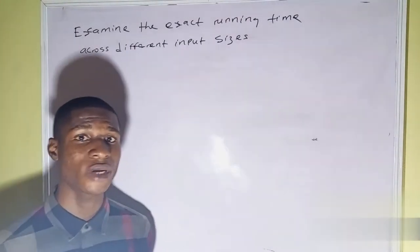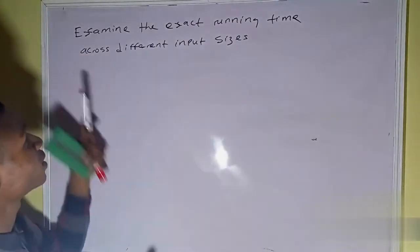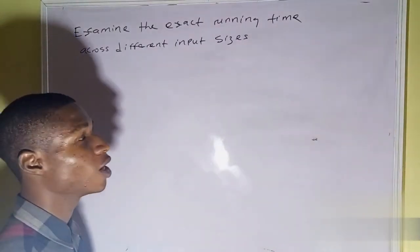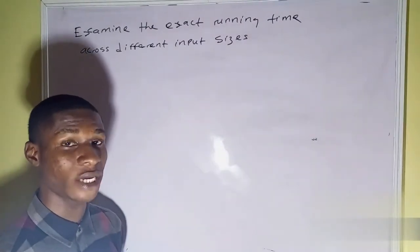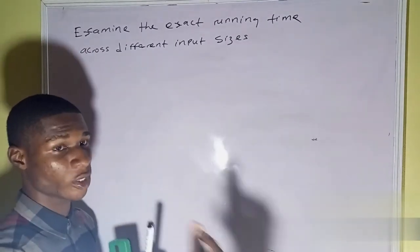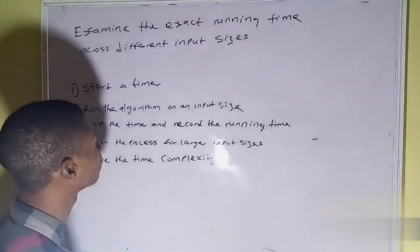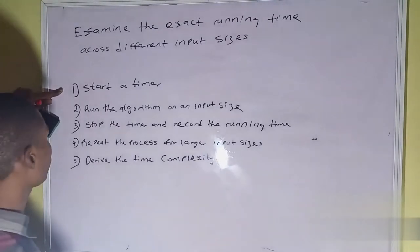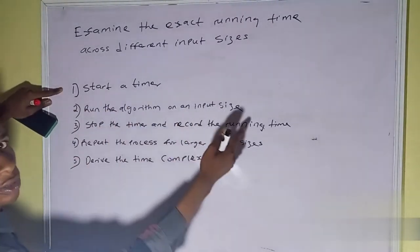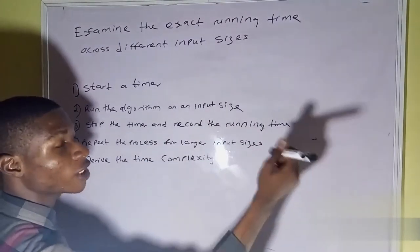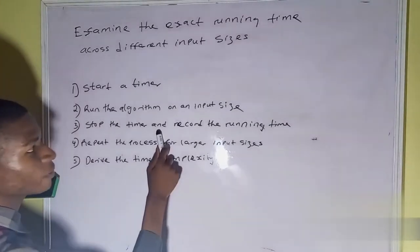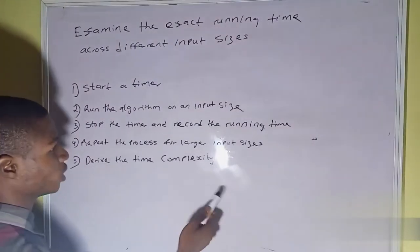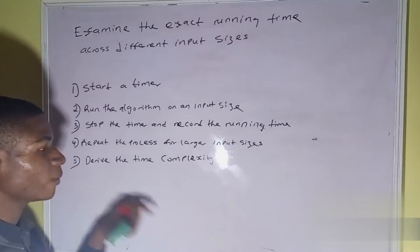The first way to derive the running time of an algorithm is to examine the exact running time across different input sizes. This is not practical, and I will tell you the reason. The steps you have to follow are: start a timer, run the algorithm on an input size, stop the timer and record the running time, repeat that process for larger input sizes, then derive the time complexity.